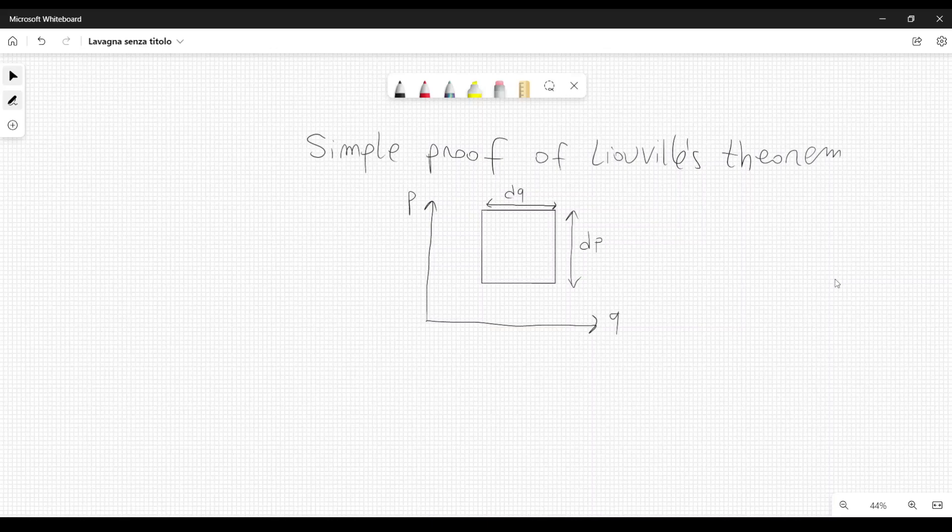We will look at a small square in phase space, and you see that I have drawn here phase space, and I have a coordinate for position, q, and one coordinate for momentum, p. We will consider just a one-dimensional system. And we will consider this small square, and we will track how its edges are moving to prove that its volume is not changing.